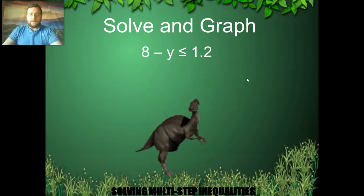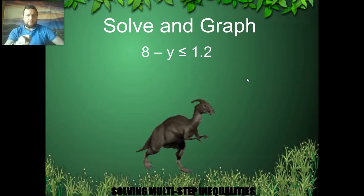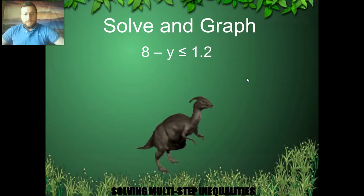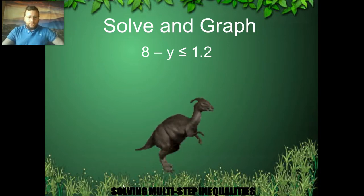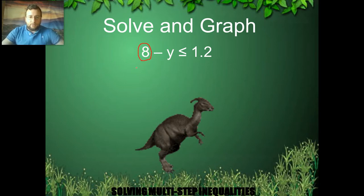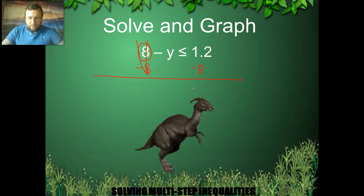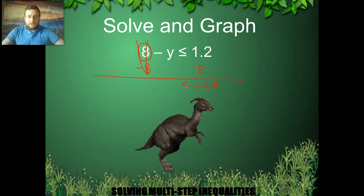Let's do one more example showing this negative in action. There are decimals, but I'm not freaking out — I know I can do this. I start by getting rid of the 8 because it's adding to my variable, so I subtract 8 from both sides. The 8 and negative 8 cancel out on the left, and I have 1.8 minus 8, which gives me negative 6.8 on the right. Because I only subtracted, the sign stays the same.